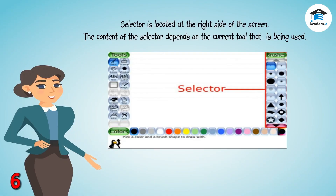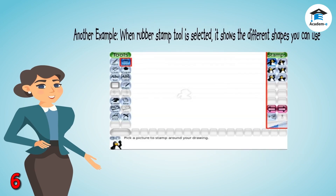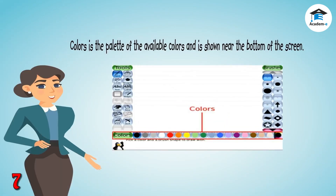The Selector is located at the right side of the screen. The content of the selector depends on the current tool that is being used. For example, when the paint brush tool is selected, it shows the various brushes available. Another example: when the rubber stamp tool is selected, it shows the different shapes you can use. Colors is the palette of the available colors and is shown near the bottom of the screen.